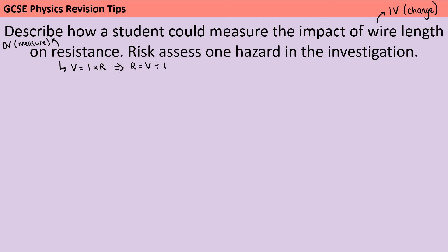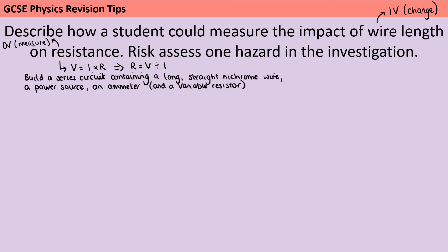Now, this is going to be quite a long method, and there are a couple of variations where you could do things one way or a different way. First off, we need to build a circuit — a series circuit that contains the wire we're going to measure the resistance of and also a power source, which could be a battery pack or a power pack, and an ammeter. You may have also included a variable resistor; this is how the exam board recommends doing it, so you may have seen that in a textbook or revision guide.